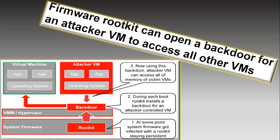Firmware boot kits are rootkits that exploit the firmware and install a backdoor in the virtual machine. An attacker VM can exploit the system firmware — the layer between the hypervisor and the physical device — install a backdoor, and then attempt to see whether other virtual machines are vulnerable. Once access is gained, the attacker can exfiltrate data, compromise sensitive information, or take control of other virtual machines.